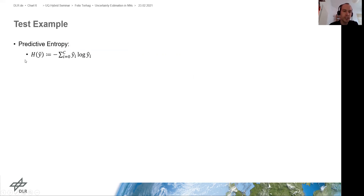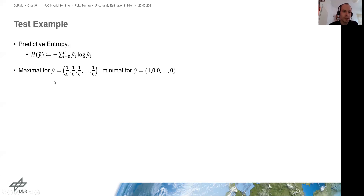To explore this even further, we look at the predictive entropy. For one prediction, the predictive entropy is defined as the negative sum over all classes of the predicted probability for that class times the logarithm of that predicted probability. It is maximal for the most uncertain prediction, which assigns each class a probability of 1/C where C is the number of classes, and it is minimal for a very certain prediction where we assign one class a probability of one and all others zero.